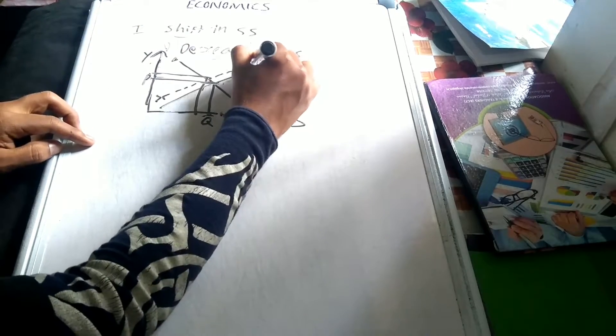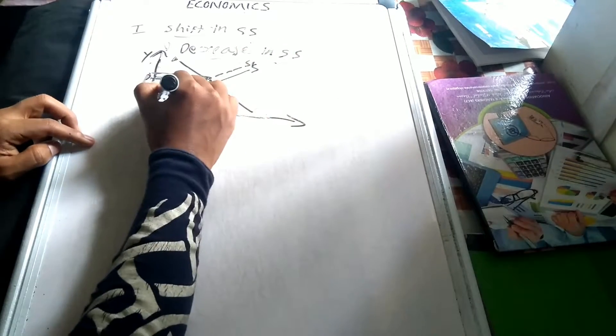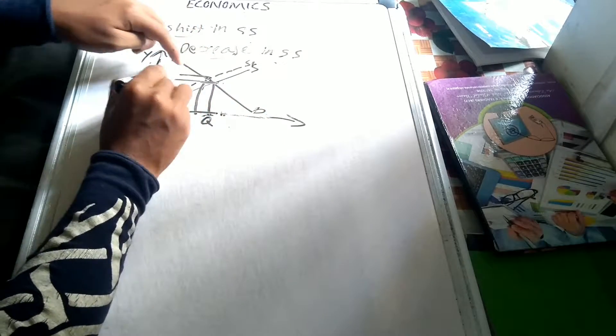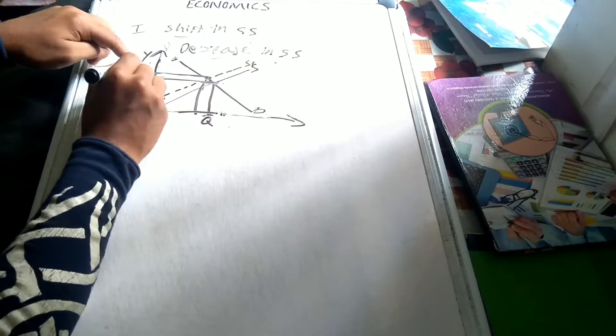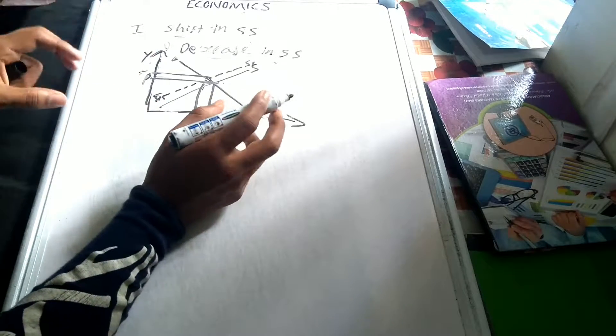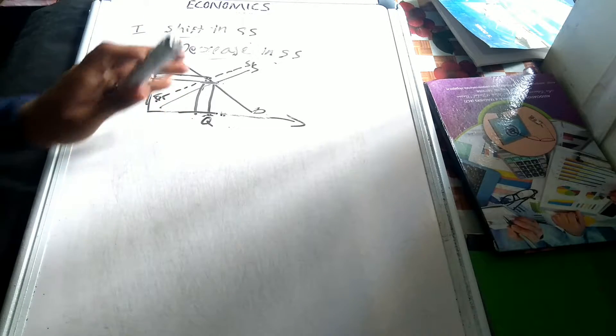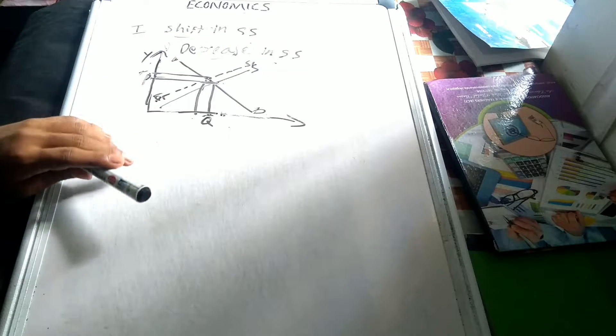Let's get started. We will talk about supply as S1. Now we will talk about demand and price, and about the quantity. So we will talk about the decrease in supply. This is one of the most important things we have to do with the supply curve.